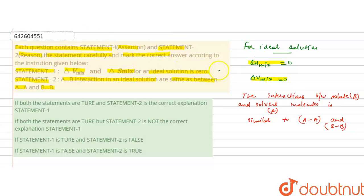So, first statement is correct, that they are 0, and second is also correct, that AB interaction in an ideal solution, they are same as AA and BB. So this is also true and this is correctly explaining the statement 1.